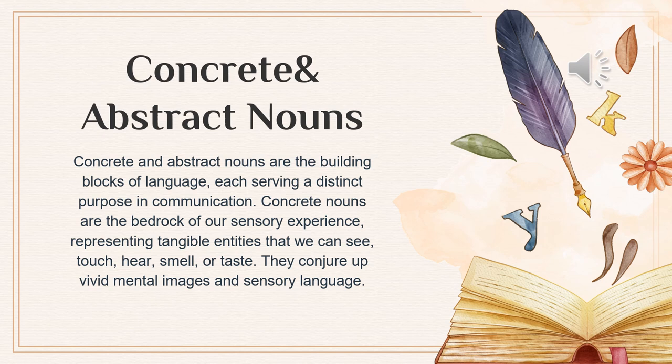Now whenever we think about types of nouns, we're going to think about concrete and abstract nouns. Concrete nouns are tangible physical objects or things that you can perceive with your senses, whether it be a tree, a book, or a car. Abstract nouns, on the other hand, represent ideas, emotions, and concepts that can never be physically touched — such as love, freedom, or happiness. In summary, concrete nouns refer to the material world, while abstract nouns deal with intangible aspects of life.